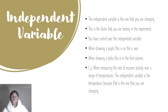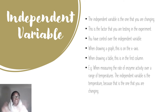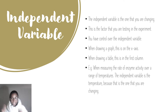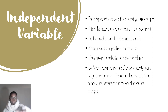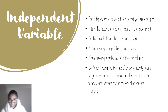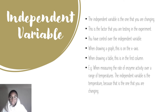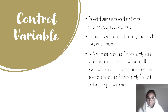The independent variable is the one that you are changing — the factor that you are testing in the experiment. You have control over it. When drawing a graph, it goes on the x-axis. Remember: x-axis is independent variable, y-axis is dependent variable. When drawing a table, it goes in the first column. Using the same example, when measuring the rate of enzyme activity over a range of temperatures, the independent variable is temperature because that is what you are changing.